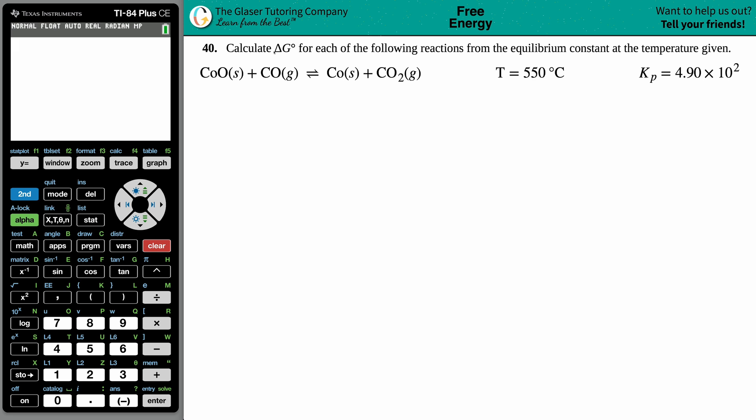Number 40: Calculate the delta G° for each of the following reactions from the equilibrium constant at the temperature given. So we have CoO solid plus CO gas gives us Co solid plus CO₂ gas. They give us a temperature of 550°C and a Kp of 4.90 × 10².